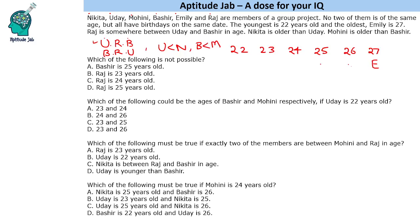We know Raj is between Udaya and Bashir, so there has to be at least one person older than Raj from both of those people. If we place Raj at a certain position, either Bashir or Udaya comes above him. Both of them must each have someone older than them — if it's Udaya then Nikita must be there, and if it's Bashir then Mohini must be there. If Raj is 25, we cannot fit two people above him, which means Raj being 25 years old is not possible.